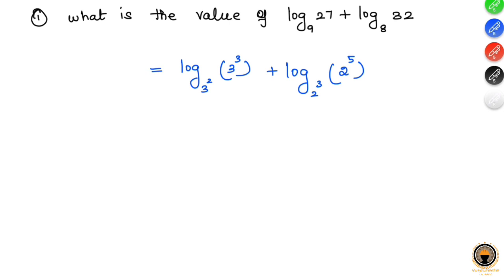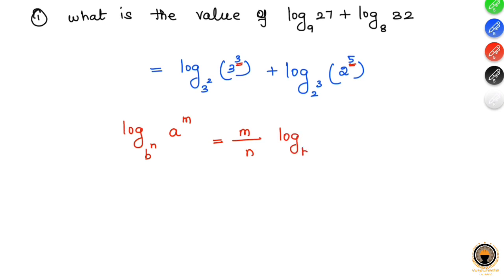Log is the power multiplication. Using the properties: log base b^n of a^m equals m divided by n times log base b of a. This is the key property we will apply for simplification.